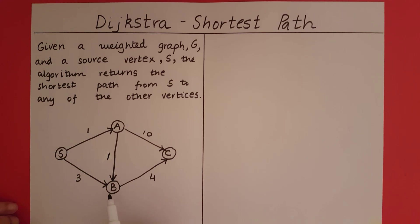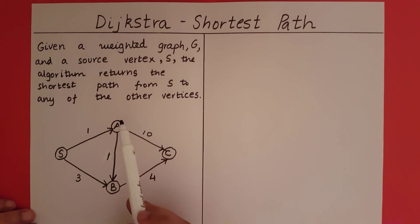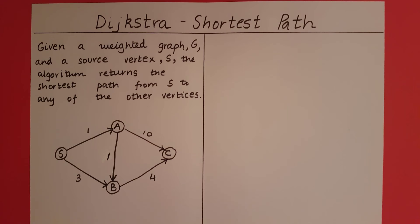Let's say we want to go to B. From S there are two paths to go to B. You have a direct path from S to B which takes a weight of 3, or you have a path through A that takes a weight of 1 plus 1 which is 2. So the shortest path from S to B will be the path through A.